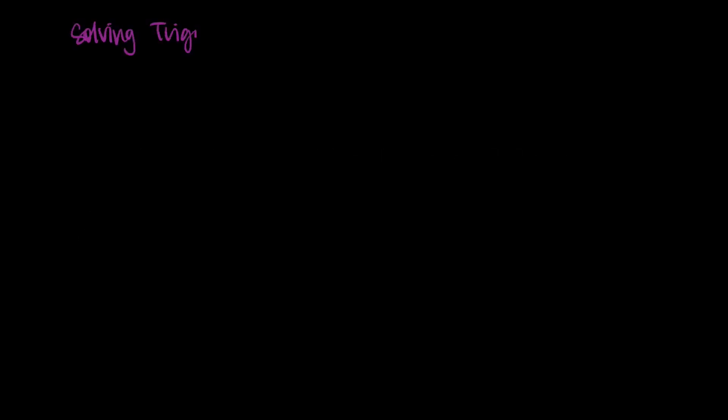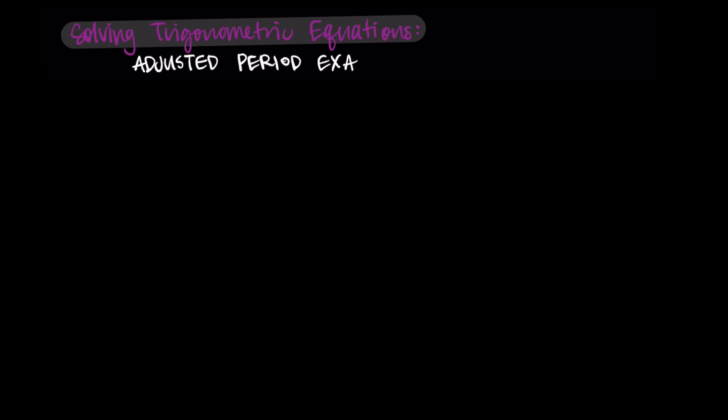Hi, and welcome. In this video, we are continuing our discussion about solving trigonometric equations, this time working through some adjusted period examples. These are examples where the period isn't our normal period of 2π for sine and cosine, or π for tangent, but instead has been transformed in some way.